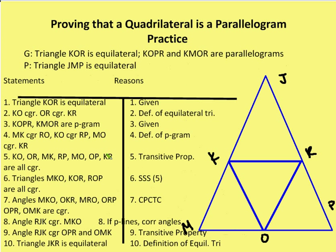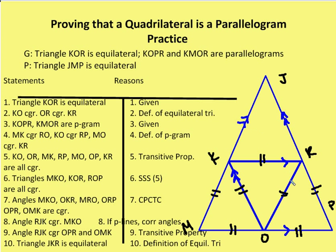So let's go through the proof. I give you the givens and the proof statement. Triangle KOR is equilateral — that's given. We mark up the diagram. Then I say that KO, OR, and KR are all congruent, by the definition of equilateral triangle. I know KOPR and KMOR are parallelograms — that's given. That tells me MK is congruent to RO, KR is congruent to MO, KO is congruent to RP, and KR is congruent to OP. Because they're parallelograms, KR is parallel to MP, KO is parallel to JP, and JK is parallel to RO.